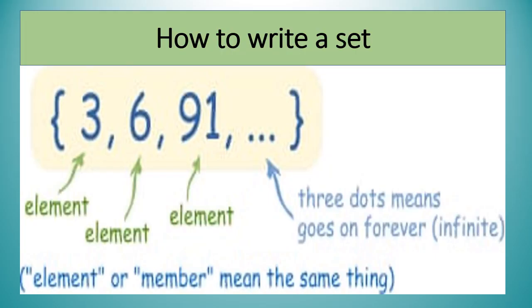In this picture you will get to know about how to write a set. You can see the elements 3, 6, 9, 1 are separated by a comma, and there are three dots which means it goes on forever — infinite. Set ke elements ko members bhi kaha jata hai, aur in ko hum curly bracket mein close karte hain.